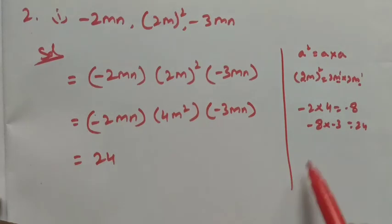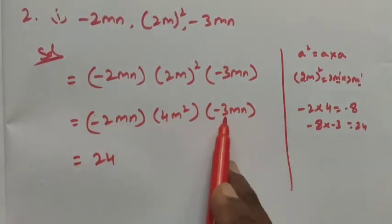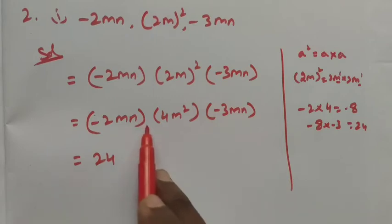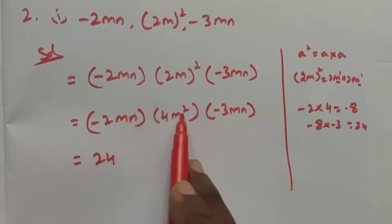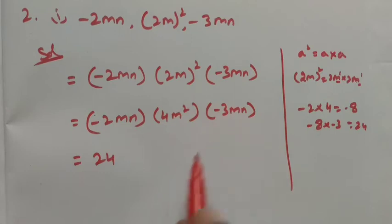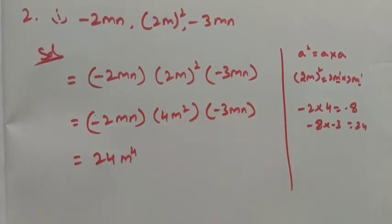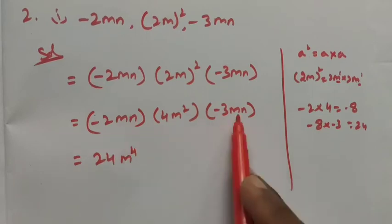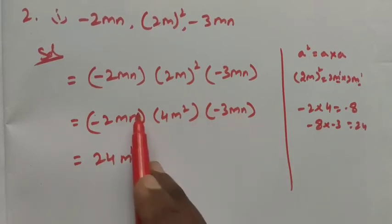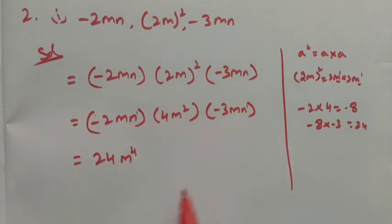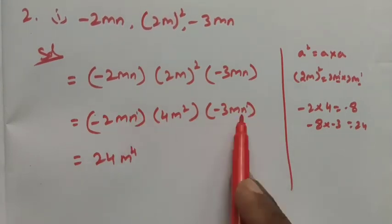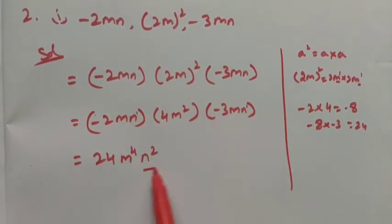For the variable m: we apply the law of exponents. When variables are the same in product form, we add the powers. We have m¹, m², and m¹, so 1 plus 2 plus 1 equals m⁴. For n: we have n and n, each with power 1, so 1 plus 1 is 2, giving n². So the answer is 24m⁴n².